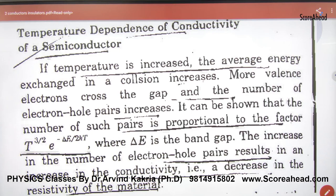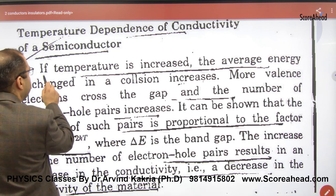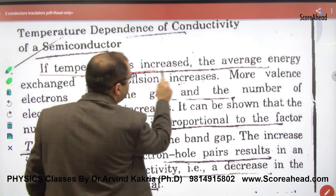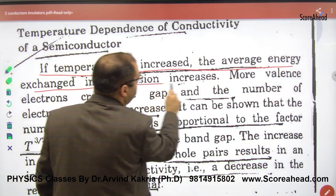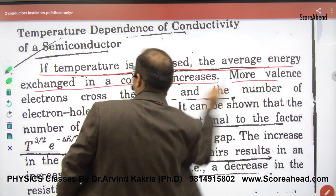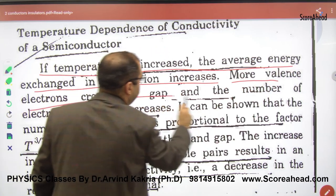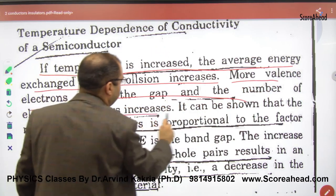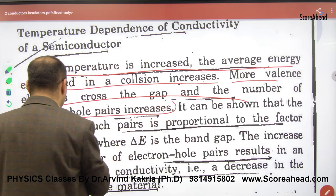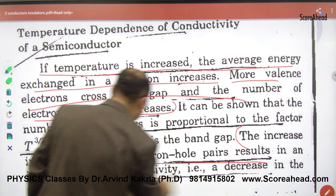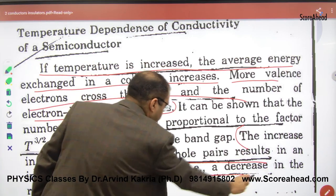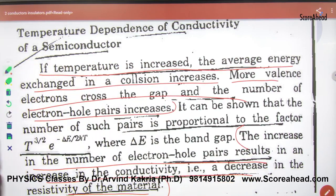You want to note this which I am going to underline: if temperature is increased, the average energy exchanged in collisions increases, and more valence electrons cross the gap and the number of electron-hole pairs increases. Then the increase in number of electron-hole pairs will result in increase in conductivity and decrease in resistivity.